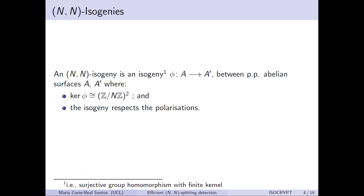An NN isogeny is an isogeny from an abelian surface to another principally polarized abelian surface A to A prime, where your kernel is given by two copies of Z mod NZ, and your isogeny respects the polarization. You ensure this happens if the generators of your kernel P and Q have Weil pairing equal to one — this is a maximal isotropic subgroup, which ensures that your isogeny will respect the polarization.